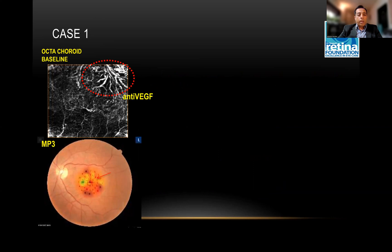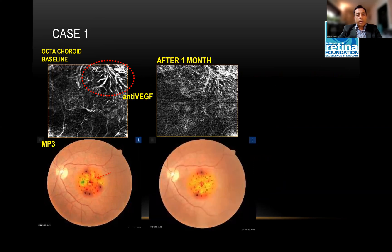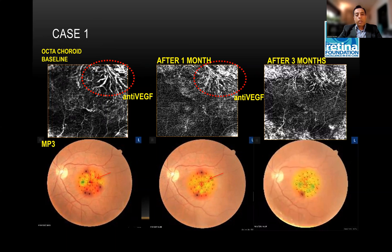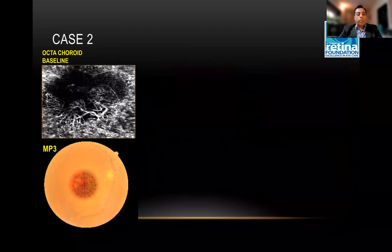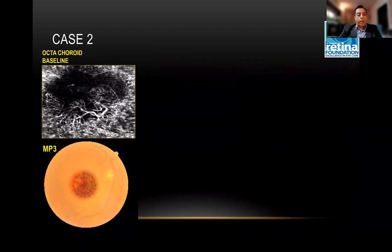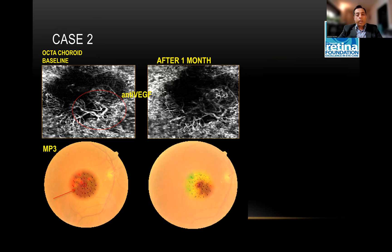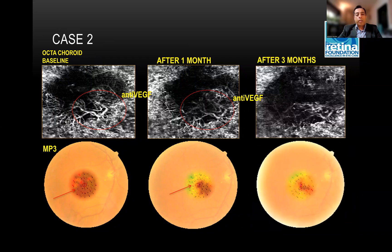You can see this case has a network. We started the anti-VEGFs, and after a month you can see that the microperimetry improves along with the OCT angiography. After three months, the network has almost disappeared on the OCTA, and the microperimetry is almost becoming yellow to green in that region. This is another case: you can see the network and extensive fluid at baseline. Once you start treating, the red colored hue representing low sensitivity keeps getting better with yellow-green colors after injections, and continues improving at the third month.